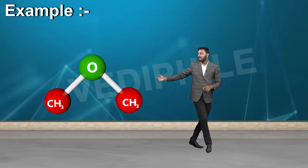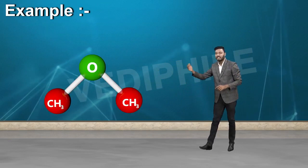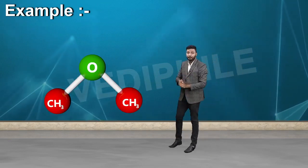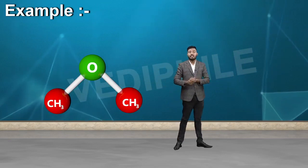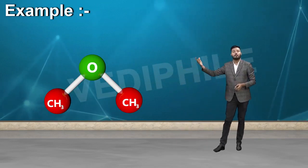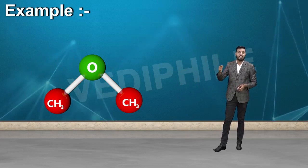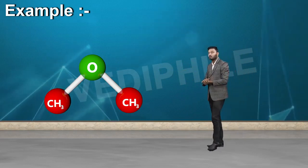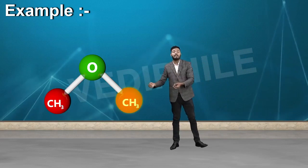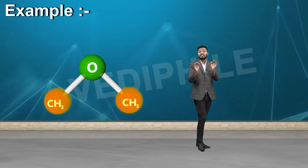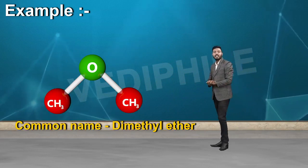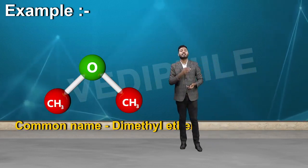Let's take the example of CH3OCH3. In the common system, both groups are methyl. One methyl is present and one methyl is present — that means both methyls are the same. So the common name is dimethyl ether.